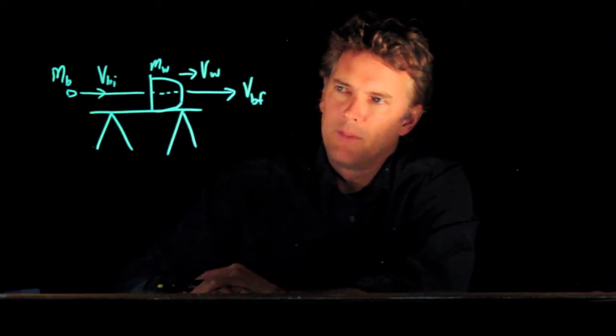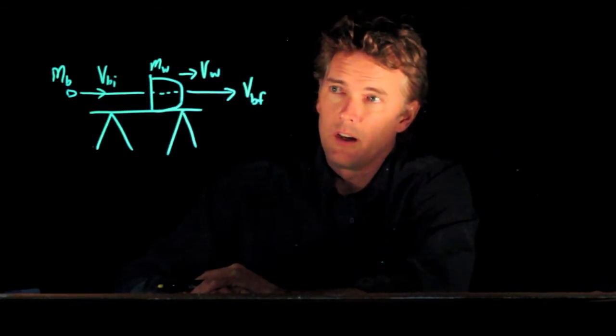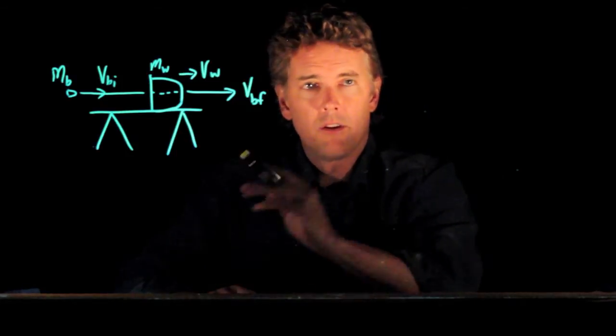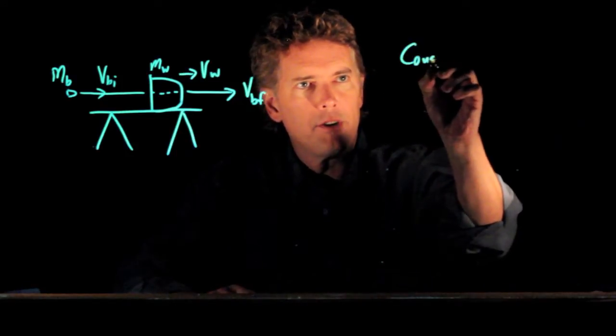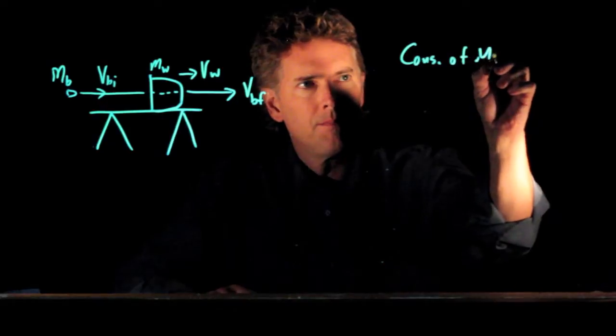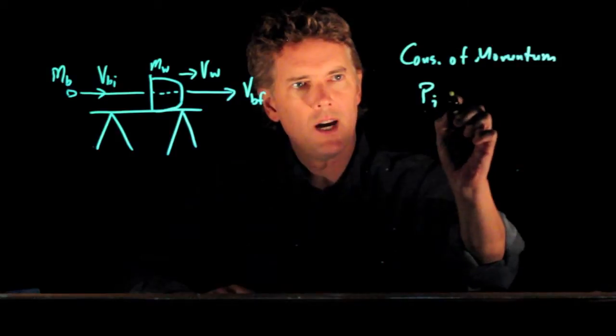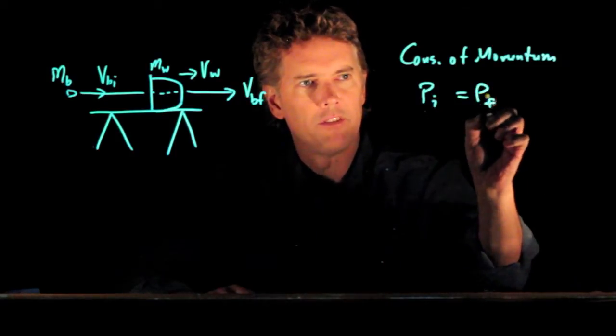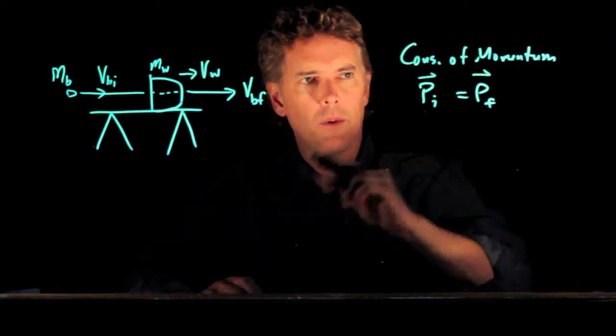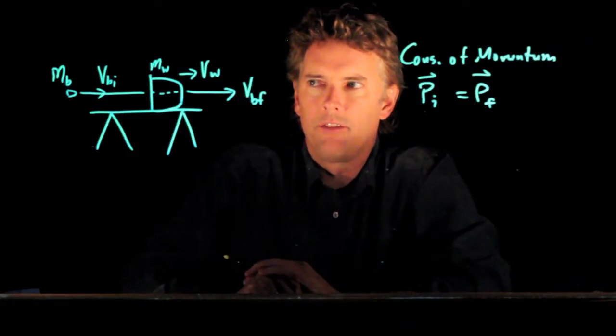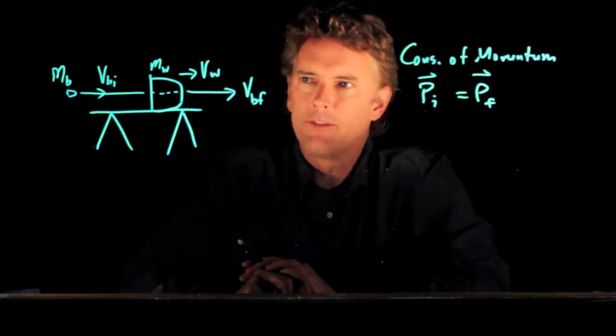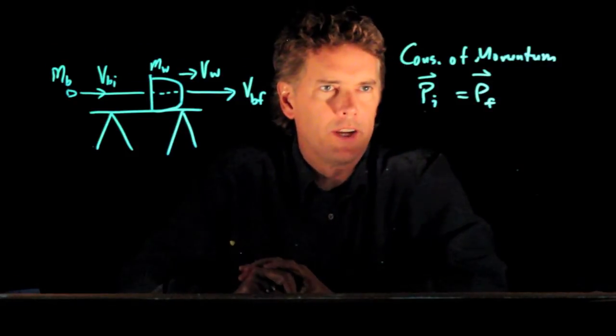So this is a conservation of momentum problem. So let's write down what we have for conservation of momentum. What we know is PI for the system has to be equal to PF. Now this is all one dimension so we don't have to worry about two-dimensional vectors in this case.